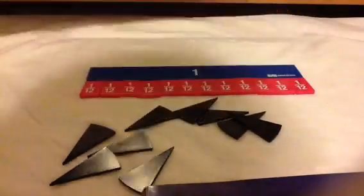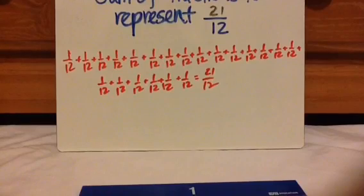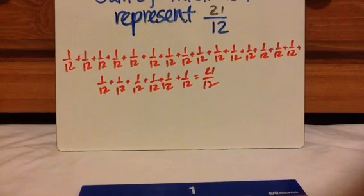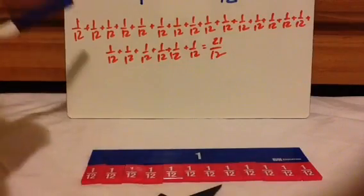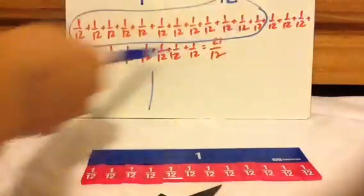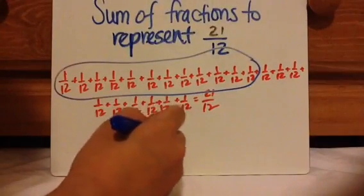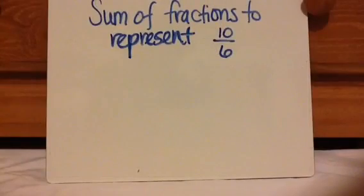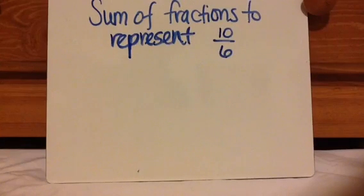Let's look at sum of fractions to represent 21 twelfths. You could write them all individually one by one. Here they are all written as unit fractions. But remember, I could also have 6 twelfths plus 6 twelfths plus 9 twelfths, or bunched up together. For this I'll show you that 12 twelfths equals 1 whole — that's one whole — and then 1, 2, 3, 4, 5, 6, 7, 8, 9 twelfths are the extras, so I have 1 whole and 9 twelfths.